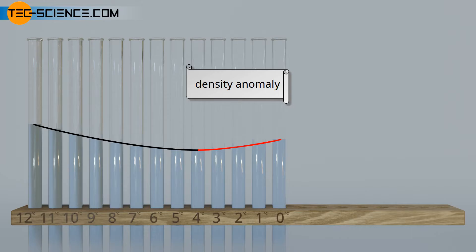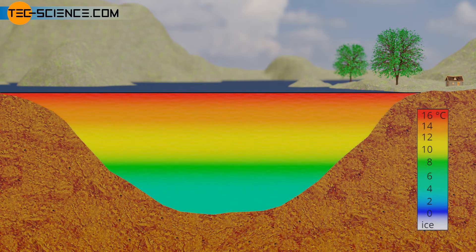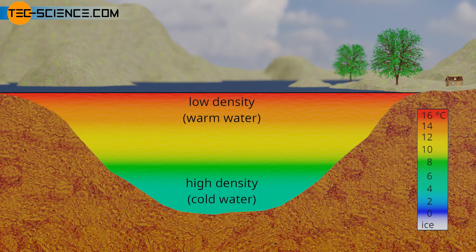The density anomaly has existential importance for life on Earth, more precisely for life underwater. Due to the density anomaly, layers of water with different temperatures form in still waters. This thermal stratification is due to the different density of water, which is caused by the different temperatures. Depending on the temperature, heavy water sinks to the bottom of a lake while lighter water rises to the top. The transitions between the temperatures of the individual layers are of course smooth.